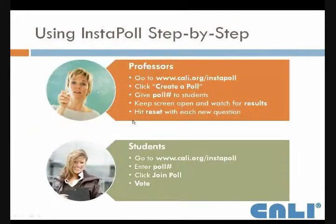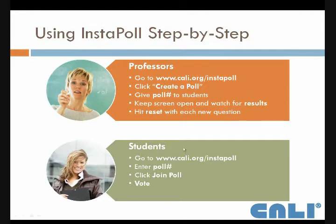It's a real easy process — just a couple of clicks. Cali.org/instapoll, click the Create a Poll button, give the students the poll number, keep the screen open and watch for results, and hit reset with each new question. You can keep asking questions throughout the class. And for the student, it's four easy steps: cali.org/instapoll, the poll number, and then vote as your professor asks questions.